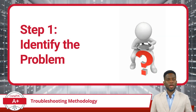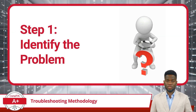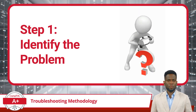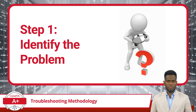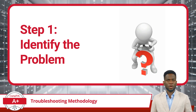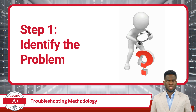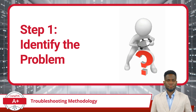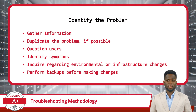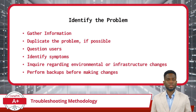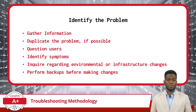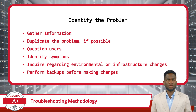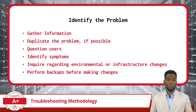The first step in CompTIA's troubleshooting process is to identify the problem. To do this, we must think logically. The main objective at this stage is to gather information. Information can be gathered in many ways — you can try duplicating the problem, as observing the issue as it occurs can give great insight. You can also question the users.